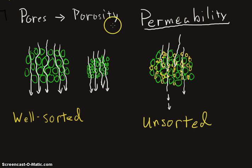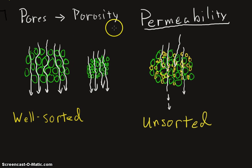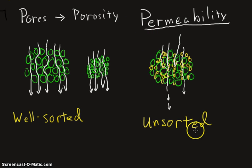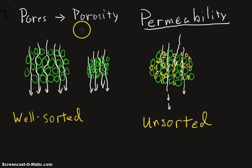In a well-sorted material, there will be high porosity and it will be very permeable. In an unsorted arrangement, the particles will have low porosity, very few pores, and will not be very permeable. Thanks for listening.